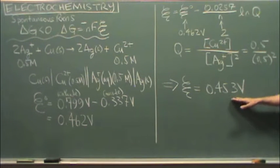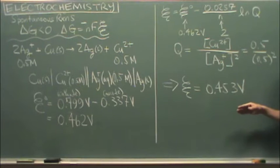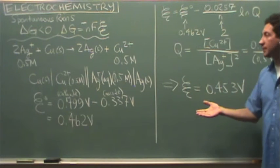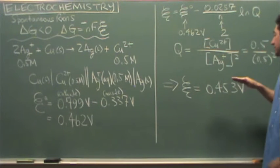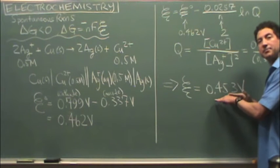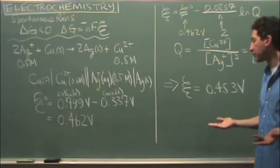So my E is 0.453. So if I measure this in lab, I should get a value similar to this. This is my theoretical value. When I measure it in lab, that's my experimental.